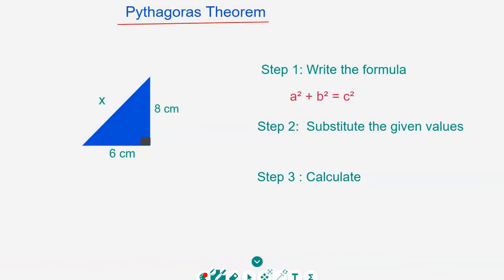Let's try a problem. We have a right-angle triangle with sides eight and six. The first thing you need to do when solving a problem is write down the formula. The formula for Pythagoras is a² + b² = c². It doesn't matter which side is a or b. Here, 6 is a, 8 is b, and the hypotenuse — which is c — is x. The hypotenuse is the longest side, opposite the 90-degree angle, usually represented by a little square.